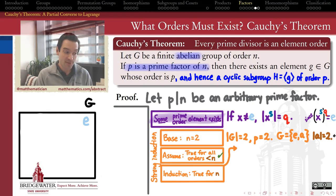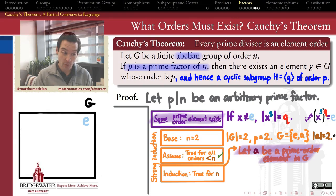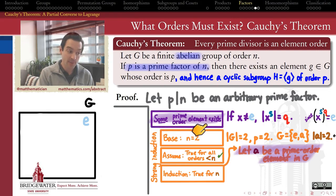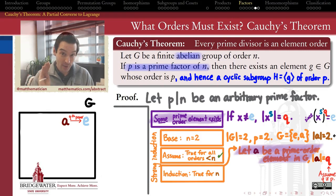Now we make our strong induction hypothesis: assume that every group smaller than G has a prime order element for any prime dividing its order. In the inductive step, we want to show our group has an element of order P. By the first result we proved, G must have an element A whose order is some prime Q. If Q already equals P, we're done — A is our element of order P. So assume Q ≠ P and we have more work to do.